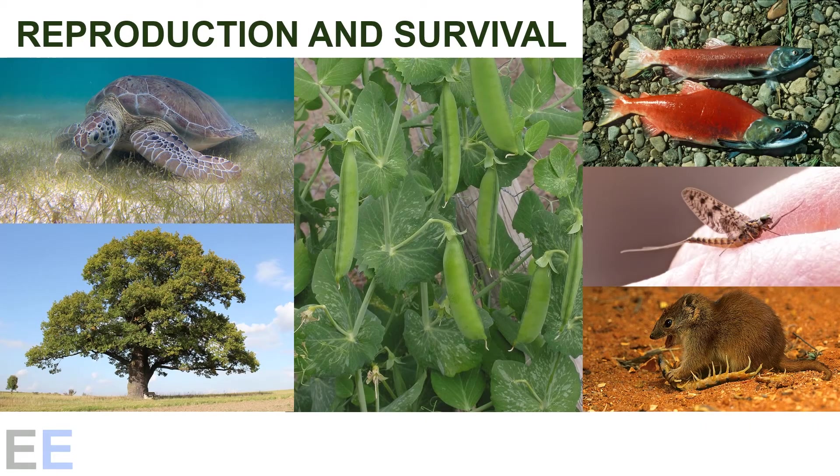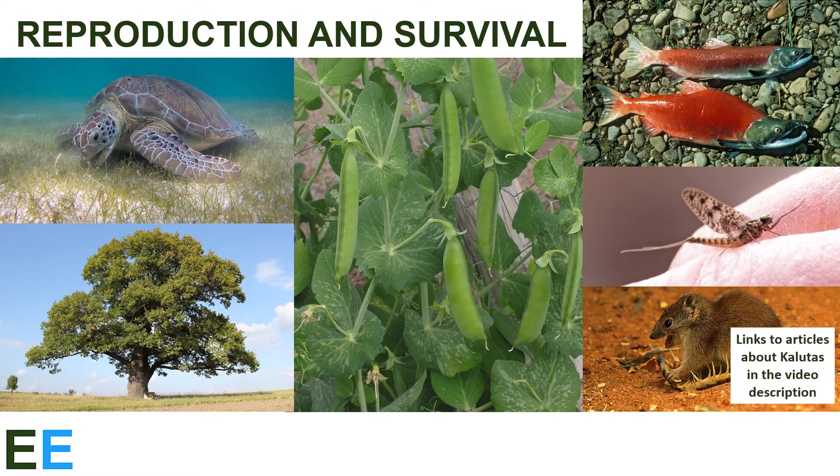Some organisms, like sea turtles and oak trees, reproduce many times throughout their lives, whereas other organisms, like peas, salmon, mayflies, and kaluta reproduce only once. Why is this?